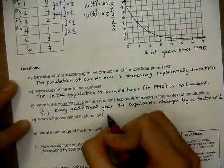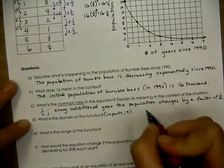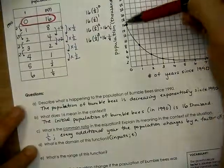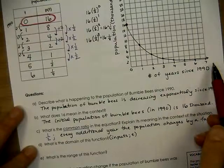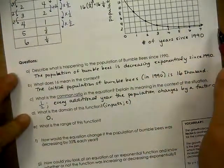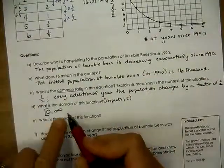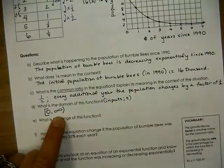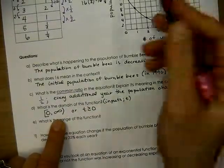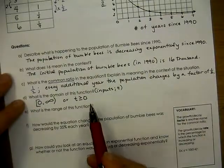What is the domain of this function? Remember, the domain are the inputs — the x values, or in this case the t values. In context, t starts at zero — that's the year 1990. It doesn't say where it ends, so it keeps going with no endpoint: from zero to infinity. We include zero, so we write [0, ∞) or t is greater than or equal to zero. Without context the domain would extend to negative infinity, but here it makes sense to start at zero.